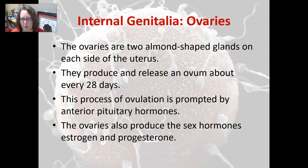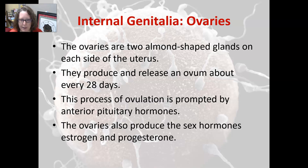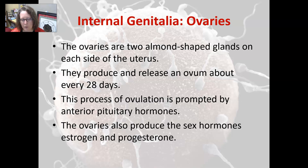The ovaries are two almond-shaped glands located on each side of the uterus. They produce and release an ovum about every 28 days, and this process of ovulation is prompted by the anterior pituitary hormones LH and FSH. The ovaries also produce the sex hormones estrogen and progesterone at different levels during the cycle to help mature the egg and thicken the lining of the uterus.